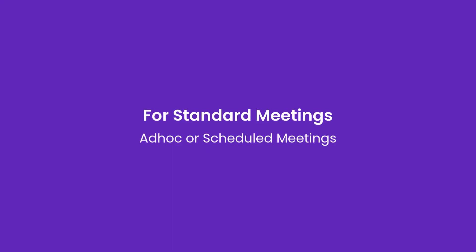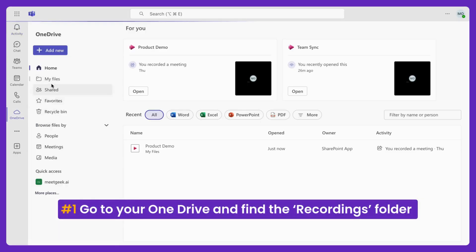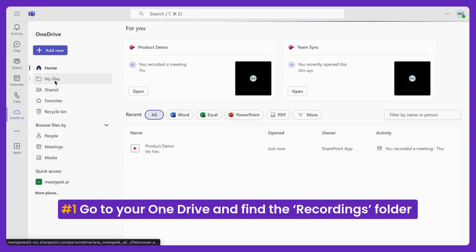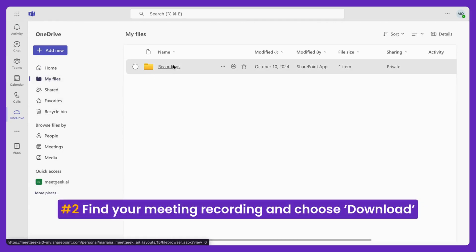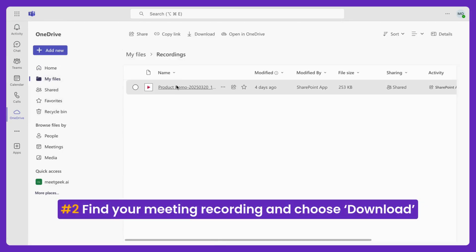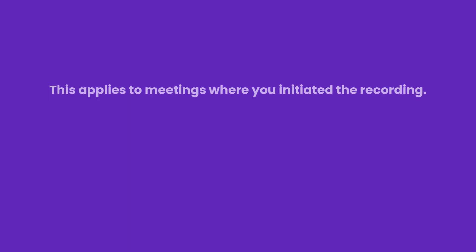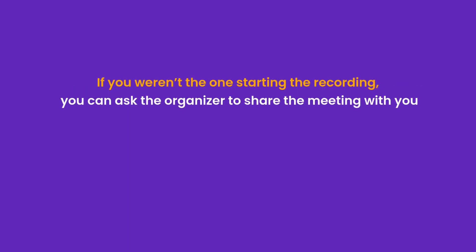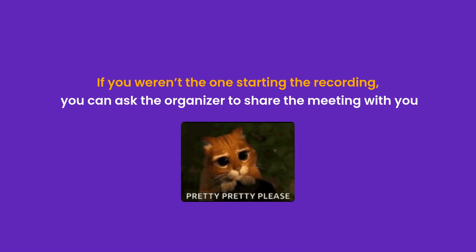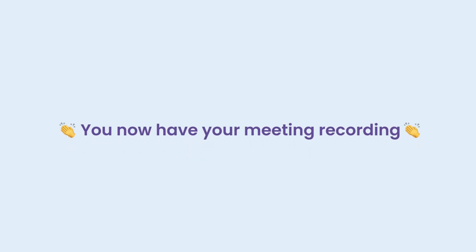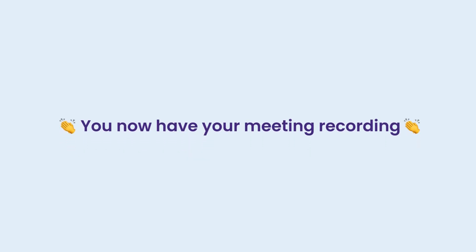For standard meetings that you recorded — the ones stored in OneDrive — go to OneDrive and find the Recordings folder. Look for your meeting recording, click the three dots next to it, and choose Download. If you weren't the person who started the recording, you can ask the organizer to share a link so you can access it. And that's it — you now have your meeting recording ready to review, share, or store however you like.